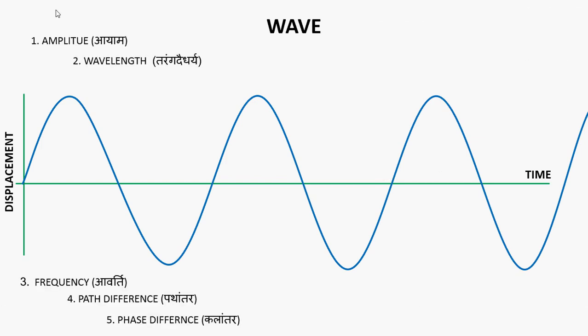The first one is amplitude. Then wavelength, frequency, path difference — which in Hindi is called path antar — and phase difference, which in Hindi is called kala antar.